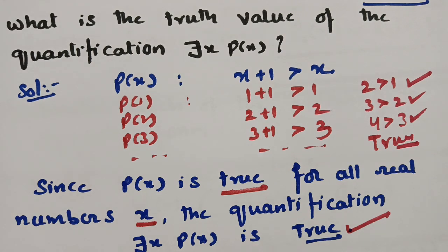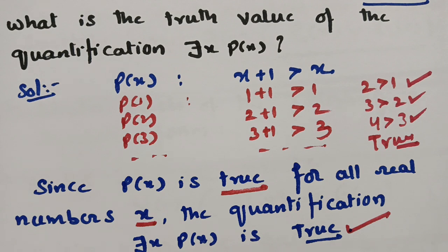Hope you all understand what a quantifier is, the types of quantifiers, their symbols, and the standard symbolic forms for universal and existential quantifiers. I've taught you a few examples and hope you can practice and write any statement in symbolic form on your own. Thank you for watching and staying till the end. If you like this video, please share it with your friends, subscribe to this channel for more videos, and check the playlist. If you practice well, you can definitely score more. Thank you so much.